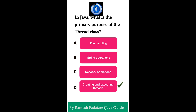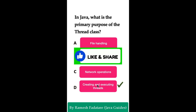The correct answer is Option D: creating and executing threads. In Java, the Thread class is a fundamental class for multi-threading. It represents a thread of execution in a program. The primary purpose of the Thread class is to create and manage threads, allowing concurrent execution of multiple parts of the program. Option D is correct because the Thread class in Java is specifically designed for creating and executing threads, making it central to multi-threading in Java.